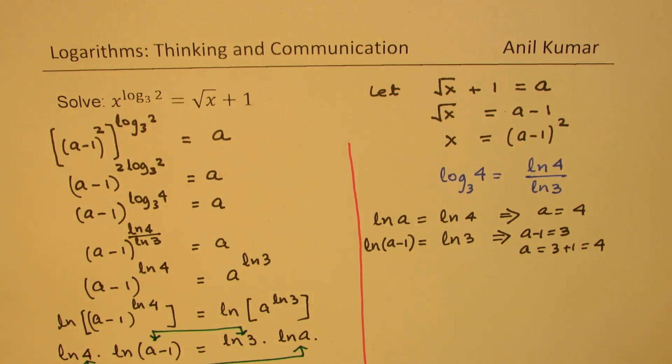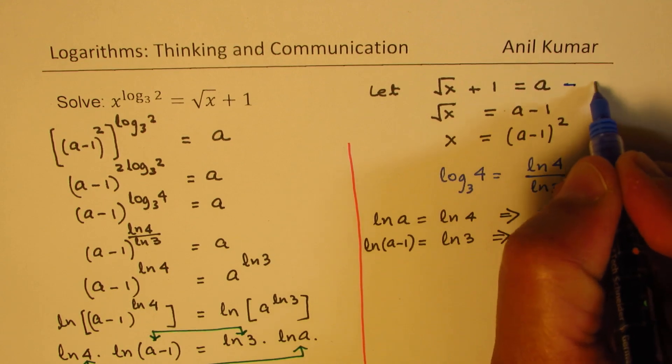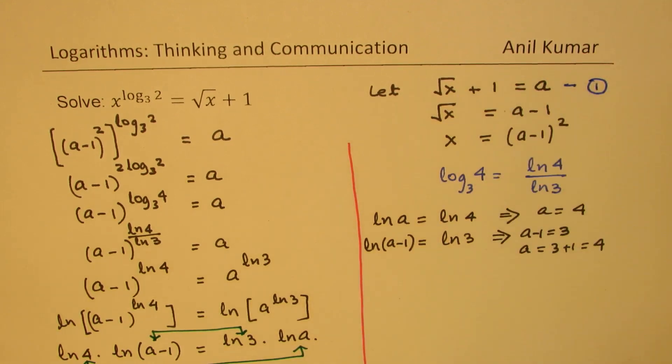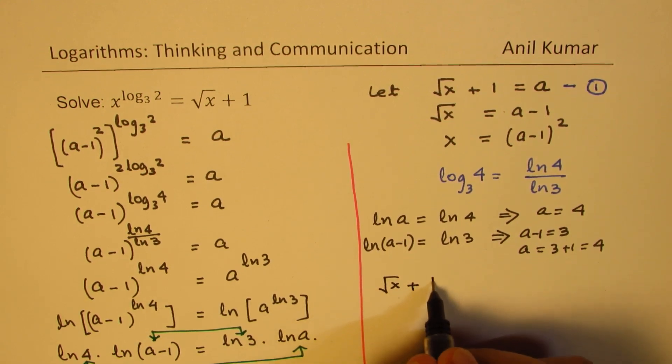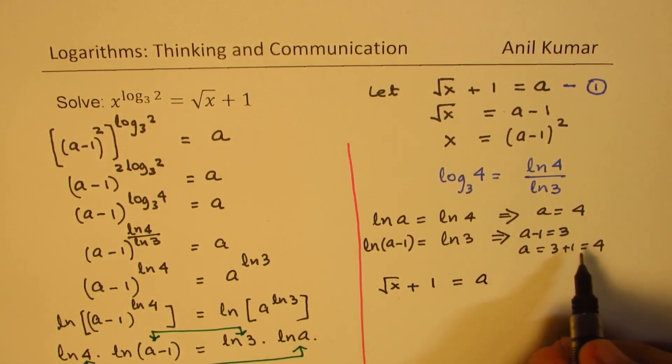In this we'll substitute the value of a. We know that square root of x plus 1 equals a, and we found a equals 4.